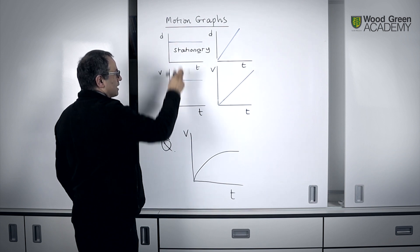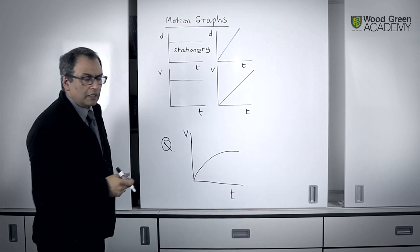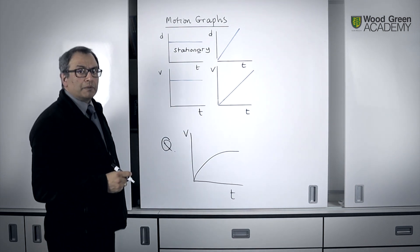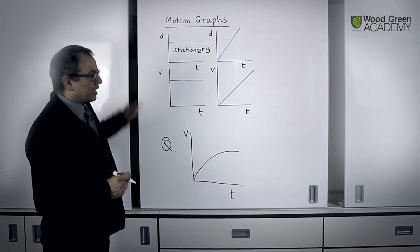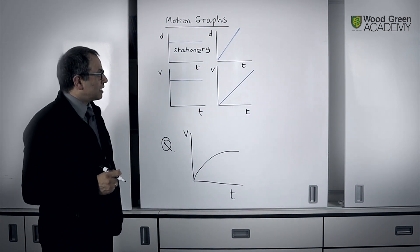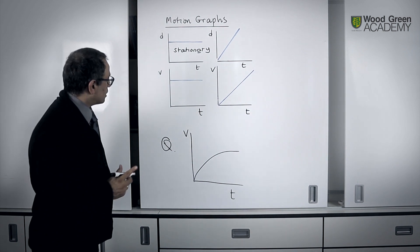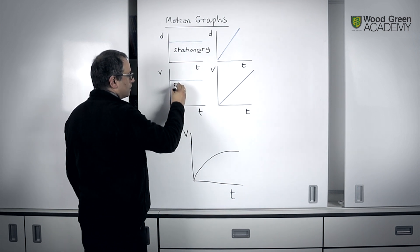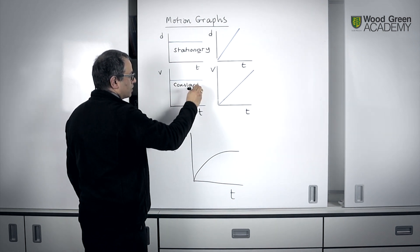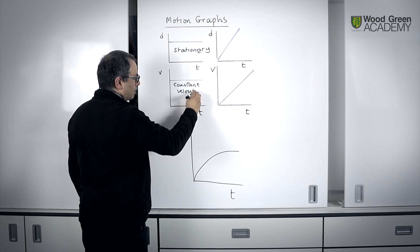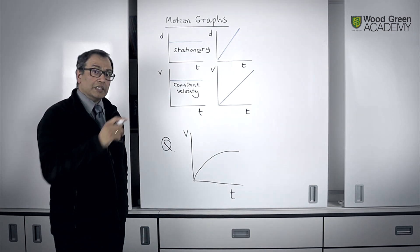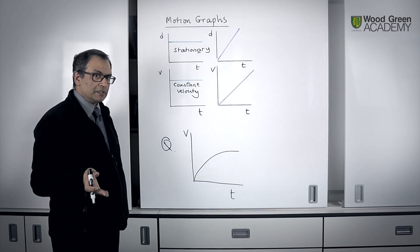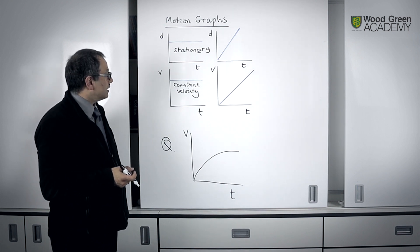You notice that this graph is exactly the same as the one above, but the label on the vertical axis has changed to velocity. Here is an exam tip. Always look at the labels on the axes in a GCSE exam so that you give the correct interpretation. Here, the velocity is not changing with time. Therefore, this one is travelling at a constant velocity. If the velocity is constant, i.e. not changing, it cannot be accelerating. So the acceleration in this context is zero.